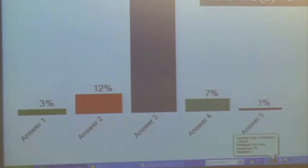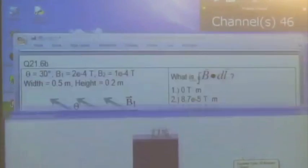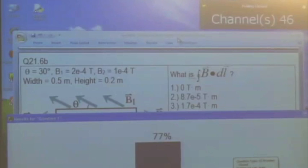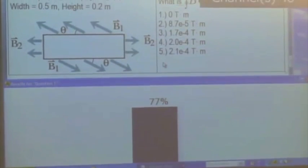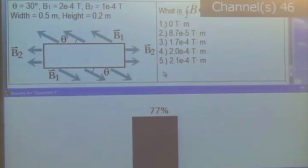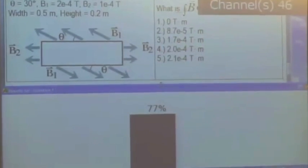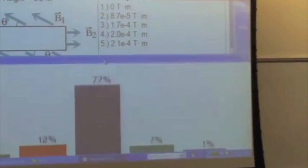Okay, so biggest vote for answer 3, which is 1.7 times 10 to the minus 4, and the units are just Tesla times meters, the magnetic field times the length. And I believe that is correct.